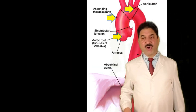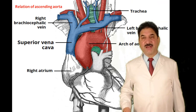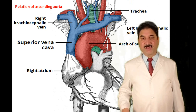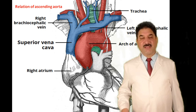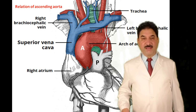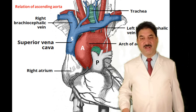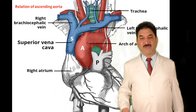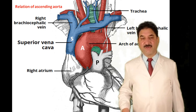What are the relations of ascending aorta with the great vessels? Anterior to the aorta is the pulmonary trunk. In the middle lies the ascending aorta, and posterior to it lies the termination of the superior vena cava. Relations from anterior to posterior are in the form of the letter PAS: P for pulmonary trunk, A for ascending aorta, and S for superior vena cava.